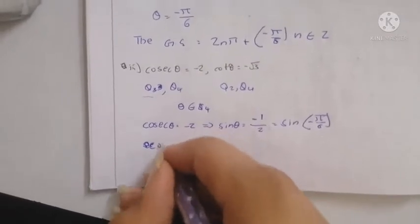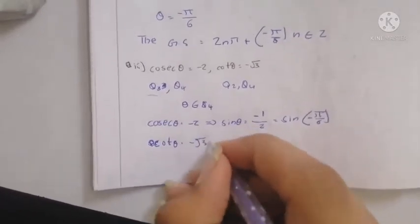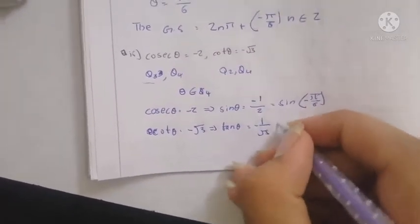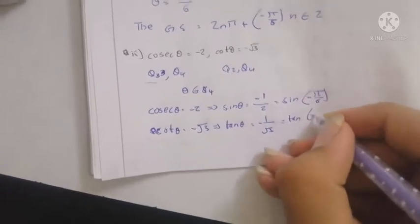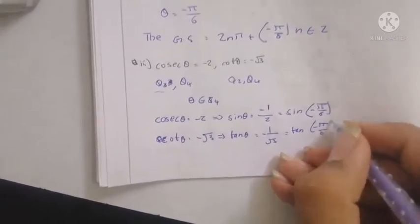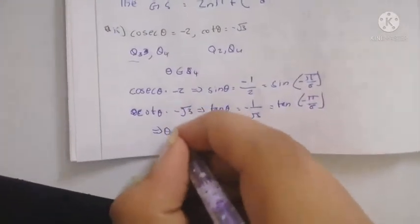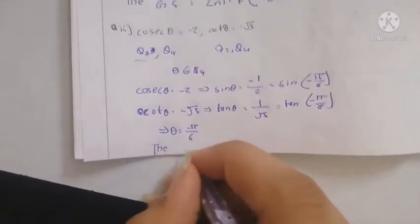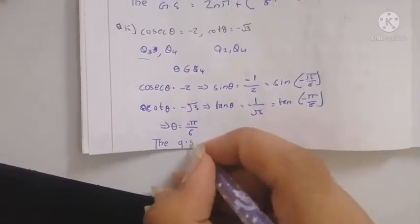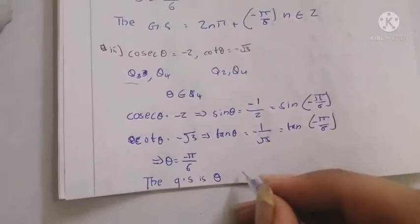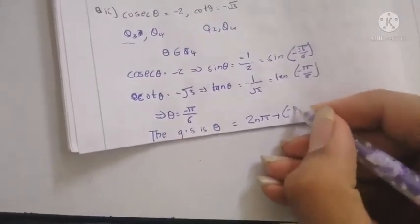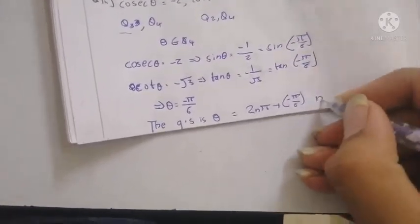Final problem: cotθ = -√3, so tanθ = -1/√3. This is satisfied by tan(-π/6) = -1/√3, with -π/6 in the 4th quadrant. So θ = -π/6, and the general solution is 2nπ + (-π/6), where n belongs to integers.